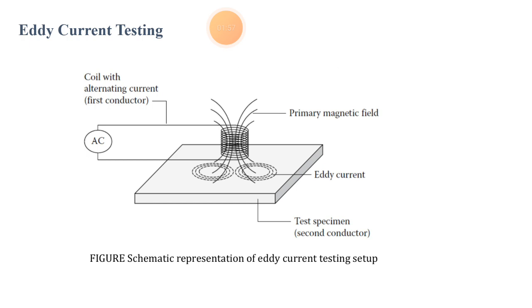See the figure of the eddy current testing setup. The setup shows the second conductor, the eddy currents, and the primary magnetic field generated by an AC current supply. The alternating current flows through the first conductor, and there are two conductors considered in this setup.